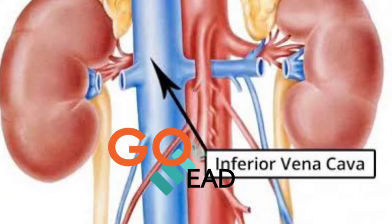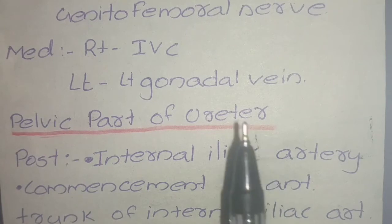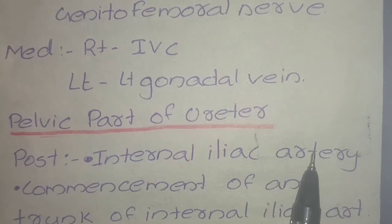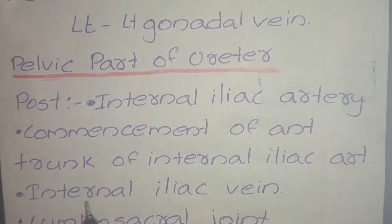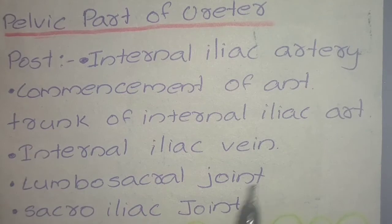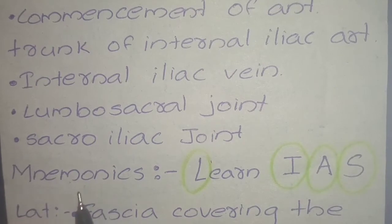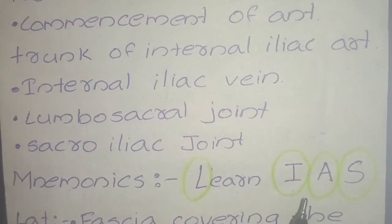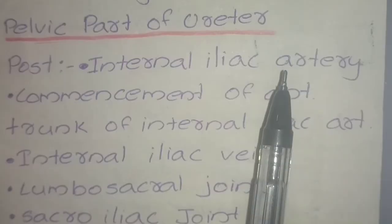In the pelvic part of the ureter, the posterior relations include the internal iliac artery, the commencement of the anterior trunk of the internal iliac artery, the internal iliac vein, the lumbosacral joint, and the sacroiliac joint. The mnemonic to remember this is 'Learn IAS': L for lumbosacral joint, I for internal iliac vessels, A for anterior trunk of internal iliac artery, S for sacroiliac joint.